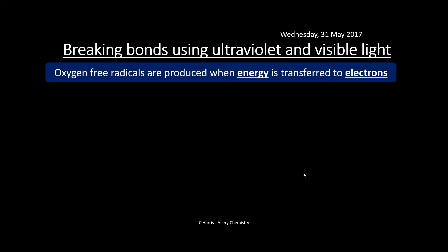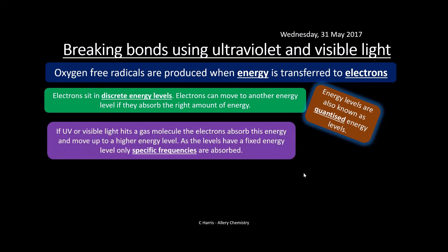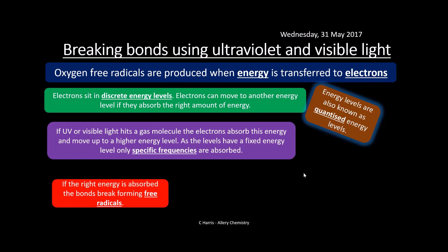Let's look at breaking bonds using UV and visible light. Oxygen free radicals are produced when energy is transferred to electrons. Electrons sit in discrete quantized energy levels and can move to a higher energy level if they absorb the right amount of energy — it has to match that energy gap exactly. When UV or visible light hits a gas molecule, the electrons absorb this energy and move up to a higher energy level. Only a specific frequency will actually be absorbed to excite the electron — it has to be just right.